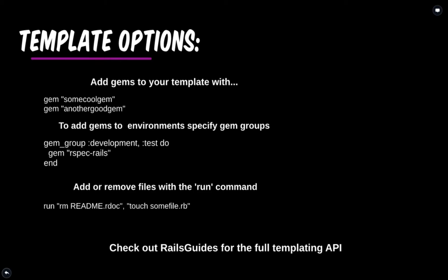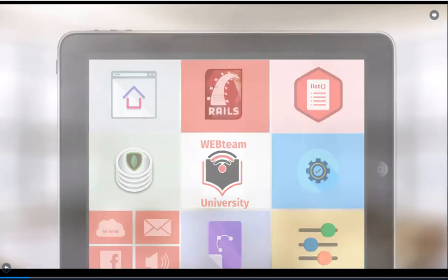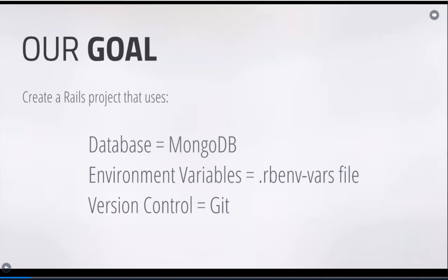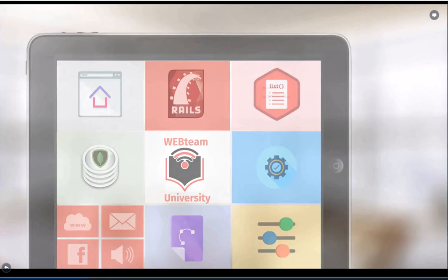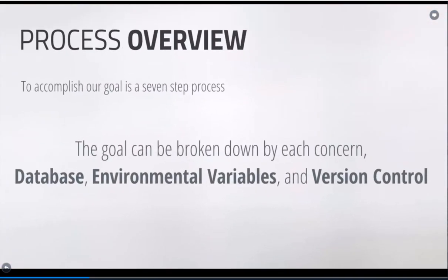There are some additional, more advanced options for templating as well — you can check out the full API at RailsGuides. So let's take a look at an example template. We're going to have a goal of using MongoDB as our database, storing environment variables in a file called .rbenv-vars, and using Git for version control. So generally these are the three main concerns: the database, the environment variables, and the version control. It's a seven-step process — we'll take one concern at a time, starting with the database.